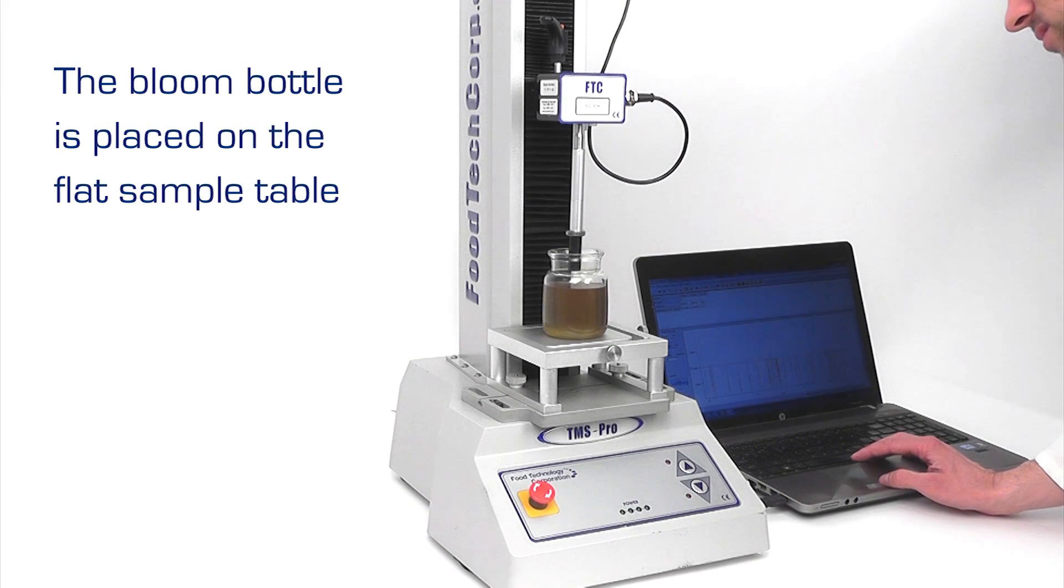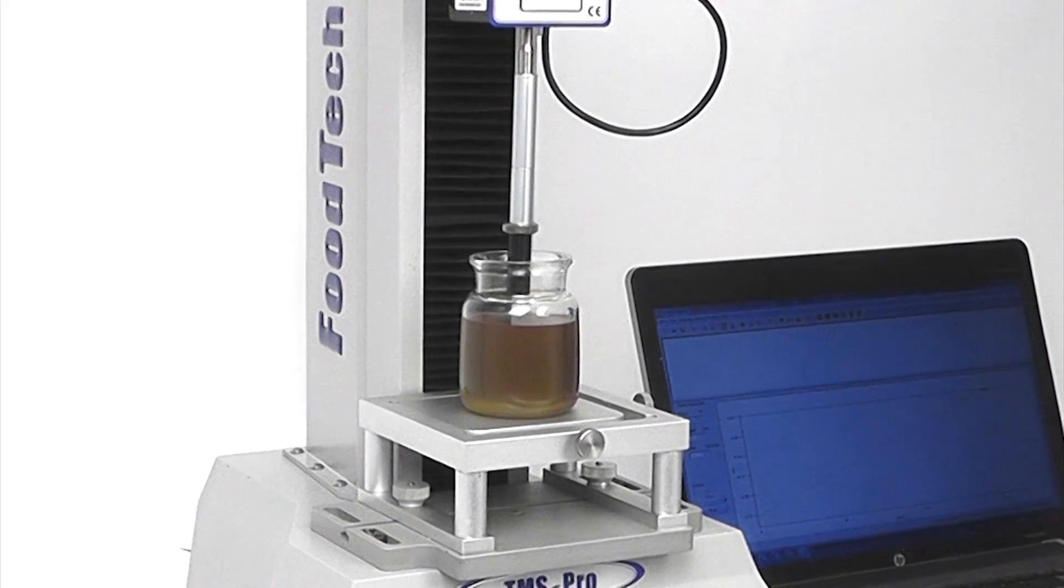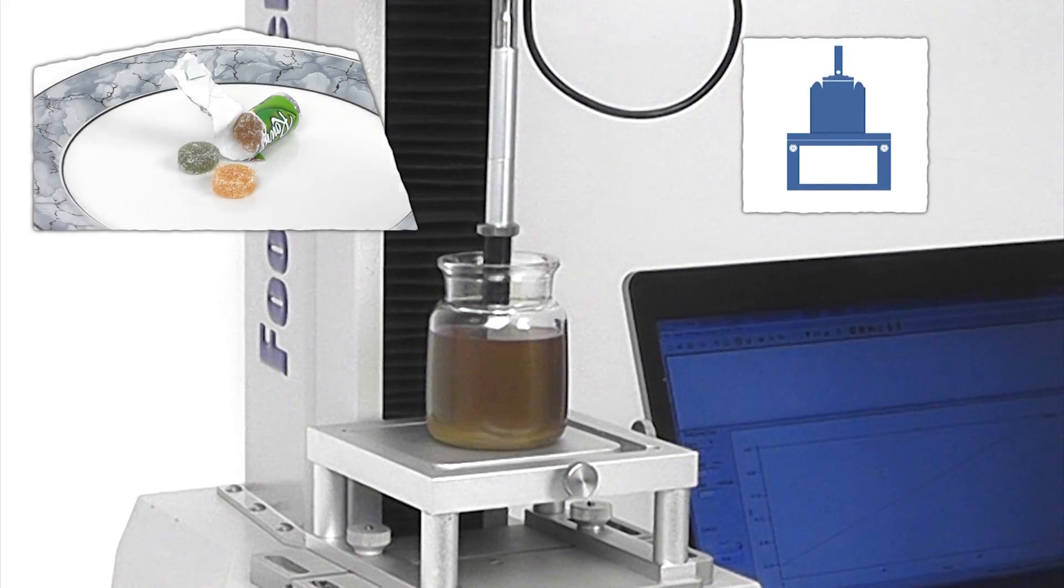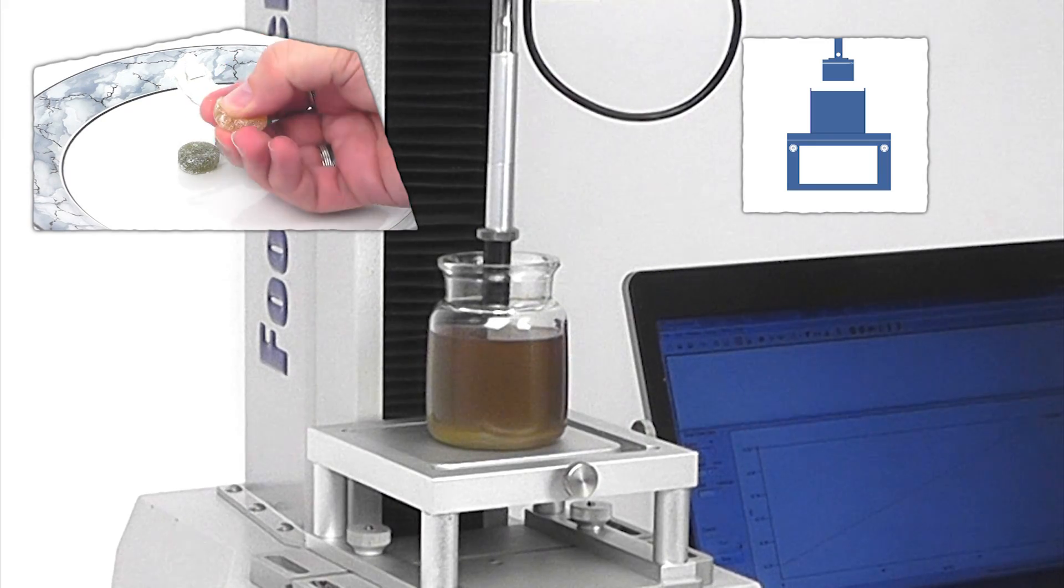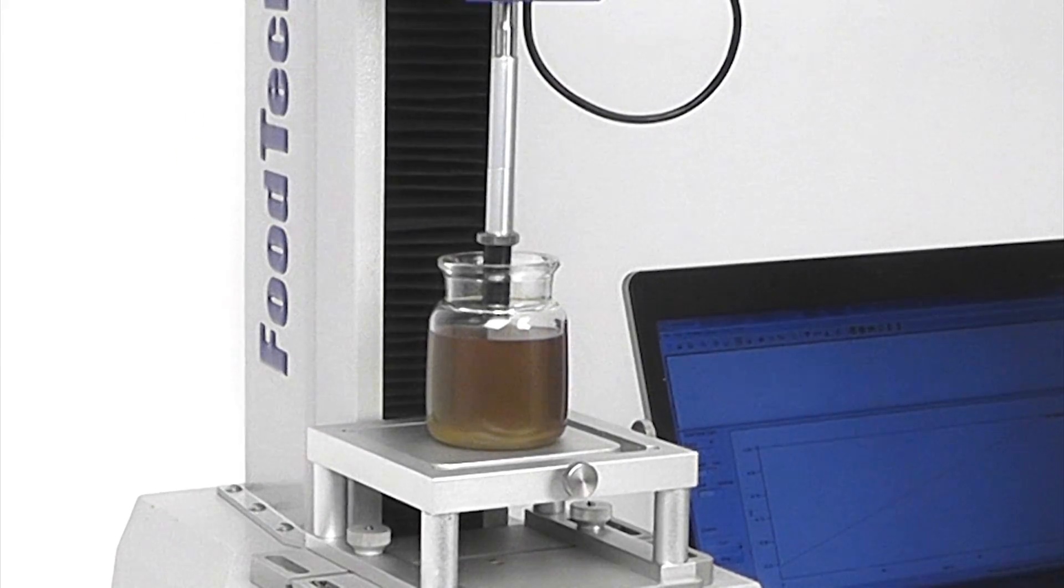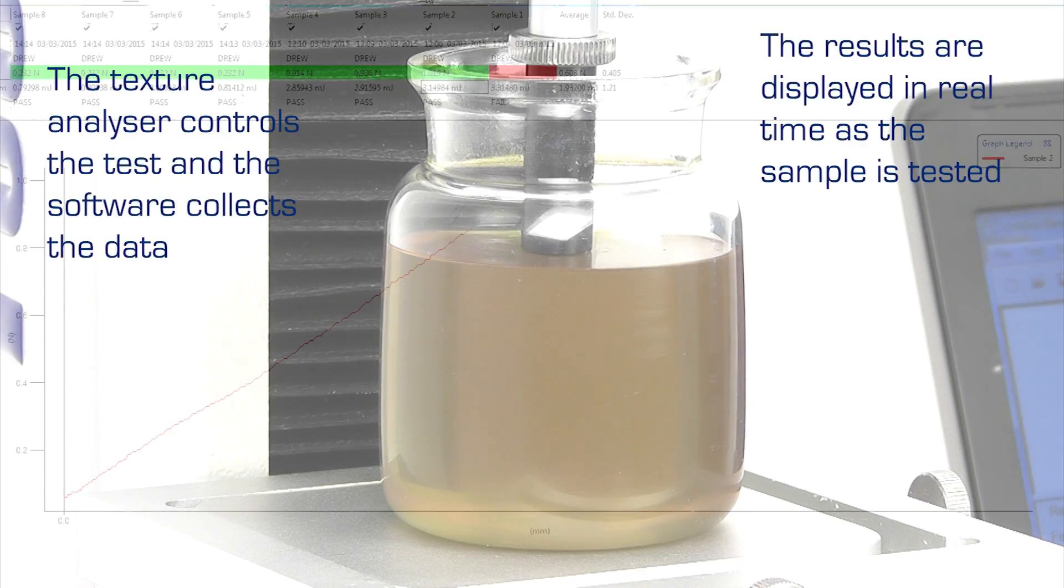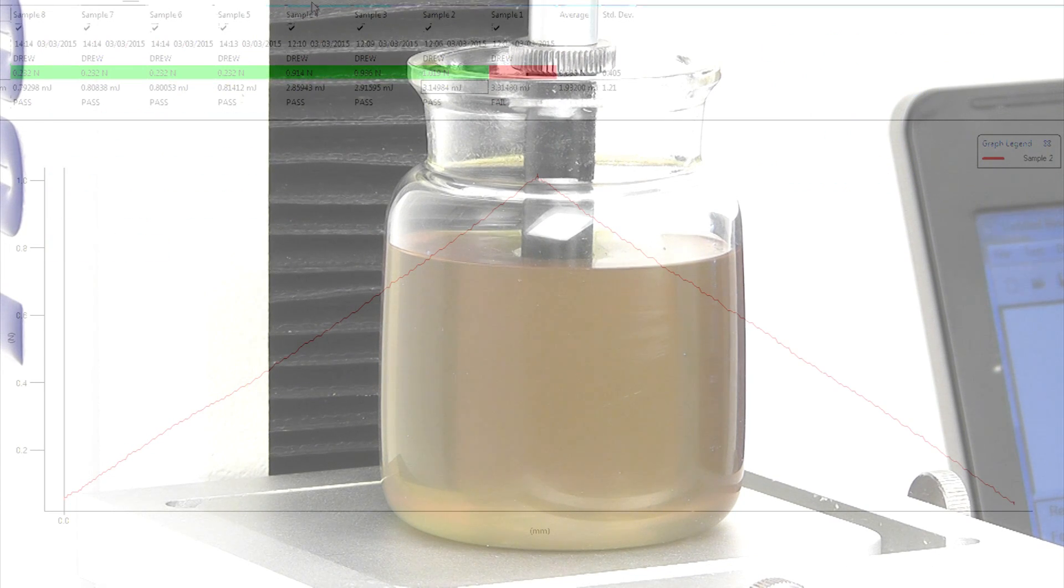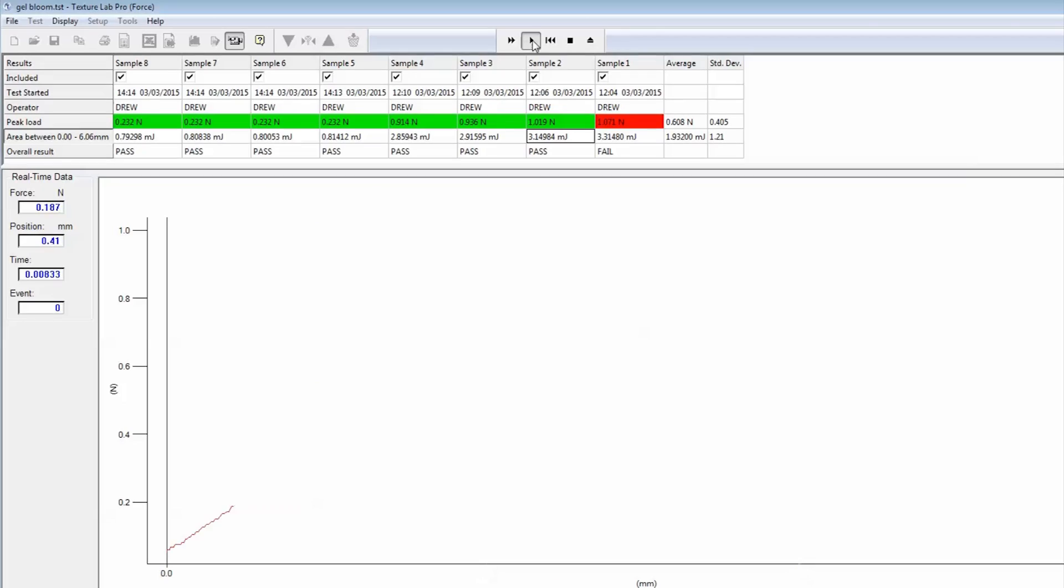The prepared gel sample is placed on the flat surface, aligned with the probe. The texture analyzer controls the whole procedure automatically. The flat surface of the cylinder locally compresses the surface of the gel by 4 mm. Real-time graphing clearly shows the behavior of the sample under test.